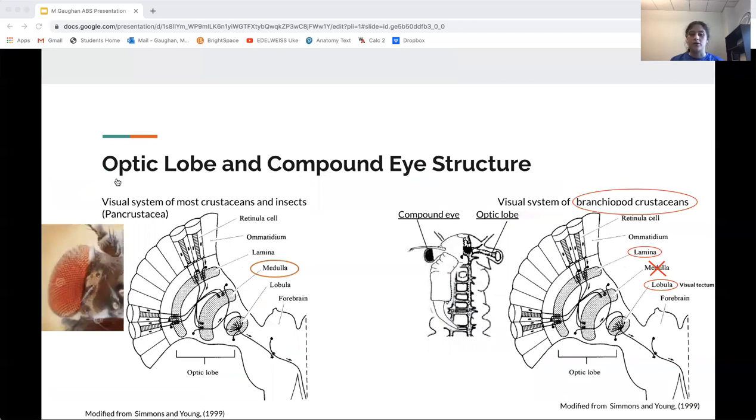Branchiopods have a simpler optic lobe neuroanatomy than other pancrustaceans, a group which includes crustaceans and insects. The optic lobe is the part of the nervous system that processes information from the compound eye and is thought to result in a reduced ability to process color information in comparison to many crustaceans or insects. The fairy shrimp and all branchiopods studied to date only have two neuropils in the optic lobes, a lamina and a visual tectum, instead of the usual three that most pancrustaceans possess as shown in the diagrams.